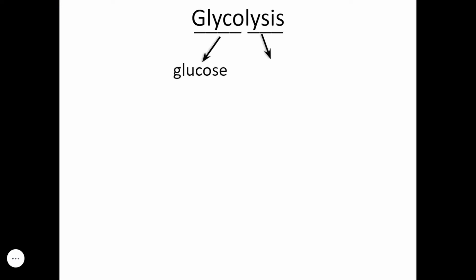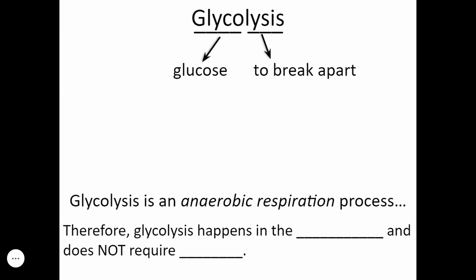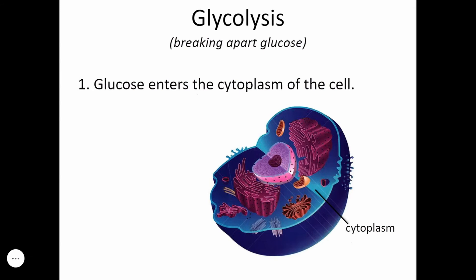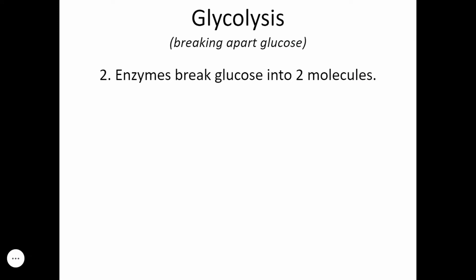In glycolysis, glucose is broken. Glycolysis literally means to break apart glucose. Glycolysis is an anaerobic respiration process. Therefore, where does glycolysis happen? If you said cytoplasm, you're right. And it does not require oxygen. Good job. In glycolysis, where we're breaking apart glucose, the very first thing that happens is glucose enters the cytoplasm of the cell. There are enzymes that break glucose into two molecules.